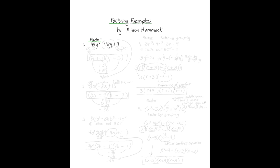When I look at 49, what things multiply to be 49? Seven times seven does. And I look at the number at the end: nine. Nine is three times three, or nine times one. This also could be 49 times one. I'm always going to start with the numbers that are closer together, so I'm going to start with these pairs.